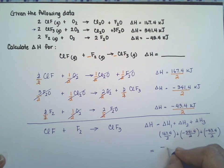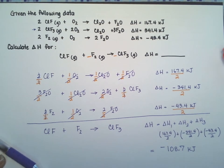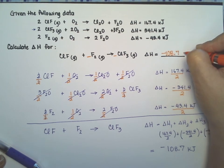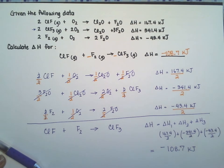If you add all that, that gives you minus 108.7 kilojoules. So let's come over here and finish the reaction: minus 108.7 kilojoules. And that's how you do this.